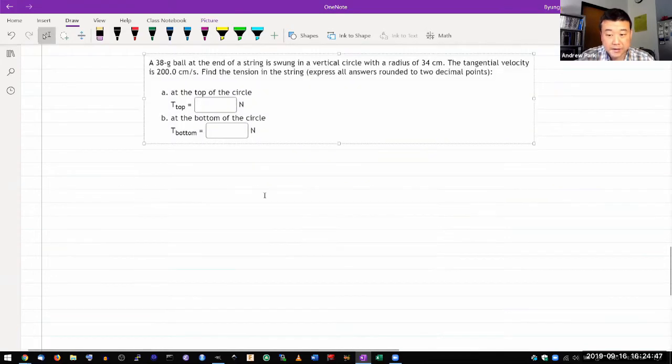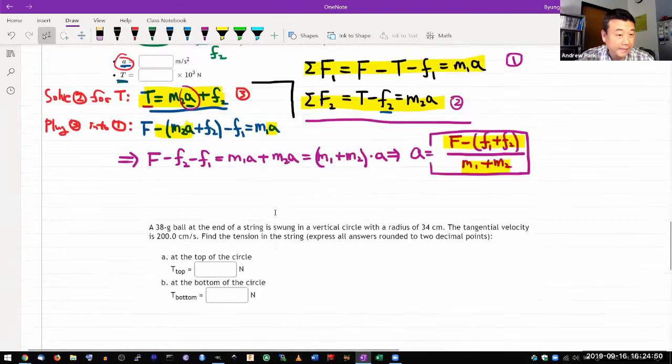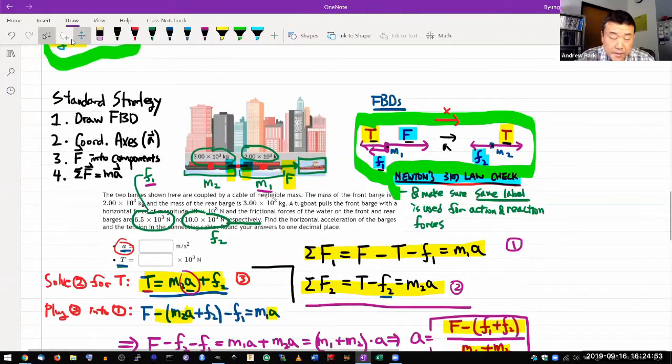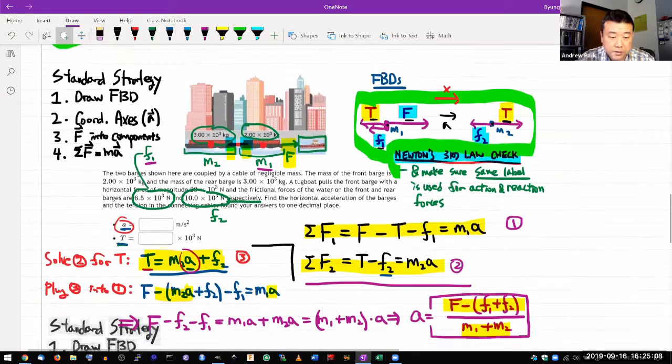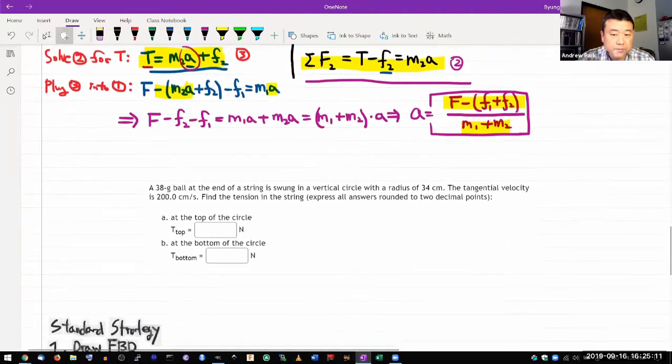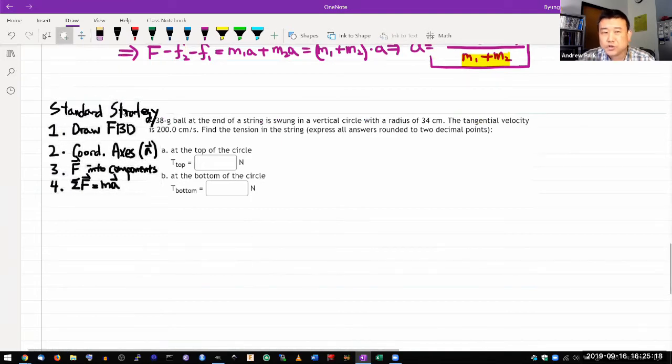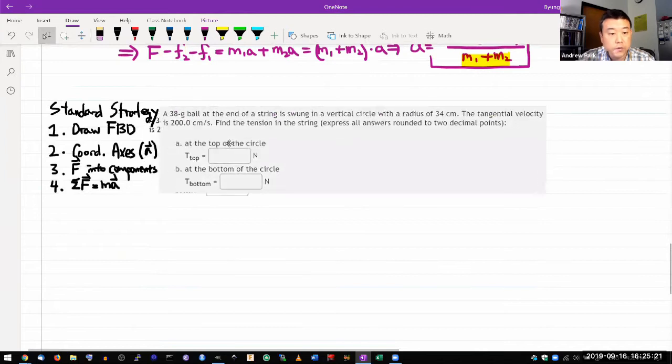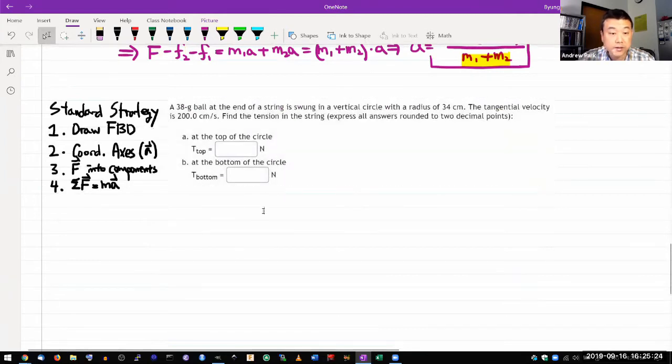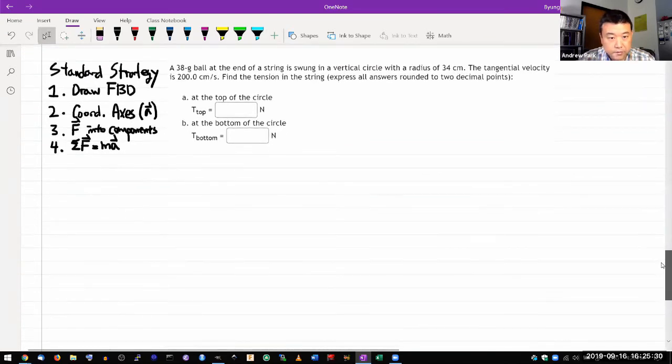Let me do this question here. With these circular motion questions, even though they look quite different from ones not involving circular motion, the basic strategy you use is still the same. You still use the standard strategy, you still draw a free body diagram, you still go through all these steps. The only thing that changes is what you know about the nature of the forces and the acceleration that you're dealing with.